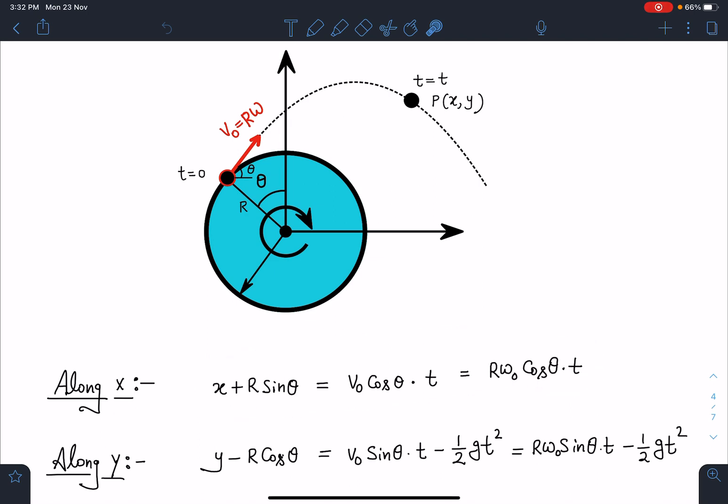Similarly along y, if you write, this height is y and this is R cos θ. So projectile motion-wise: v₀ sin θ t - ½gt² = y - R cos θ.